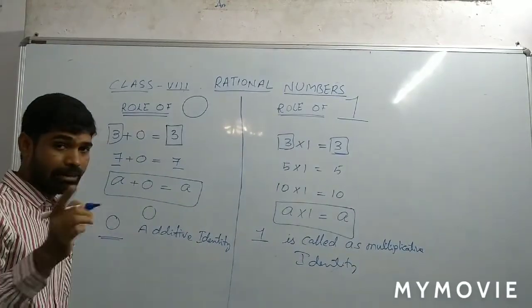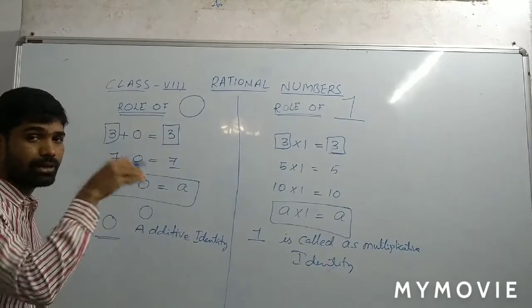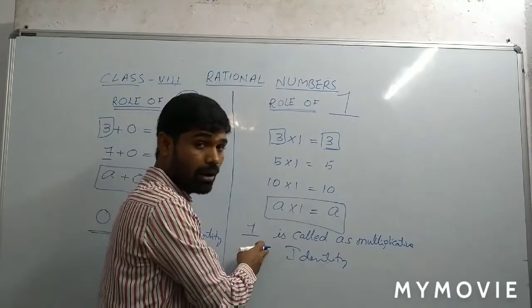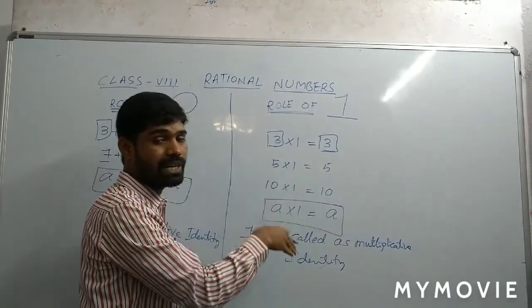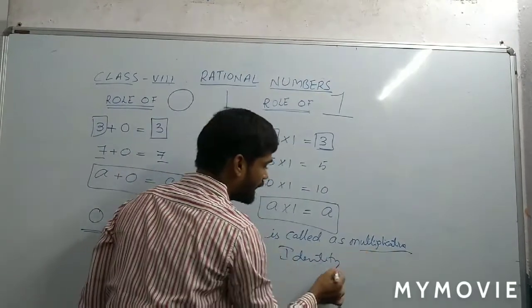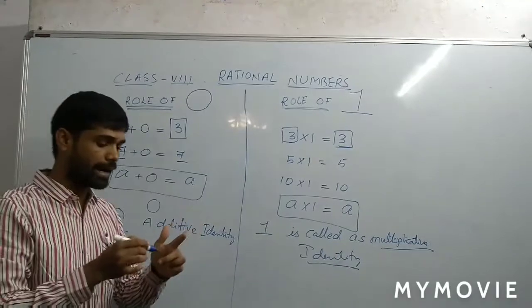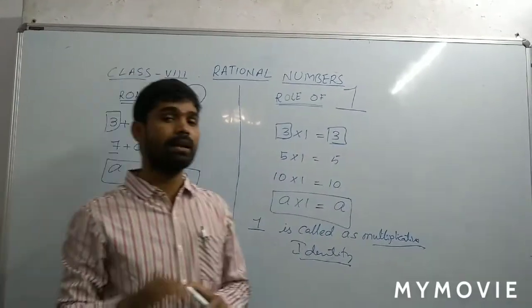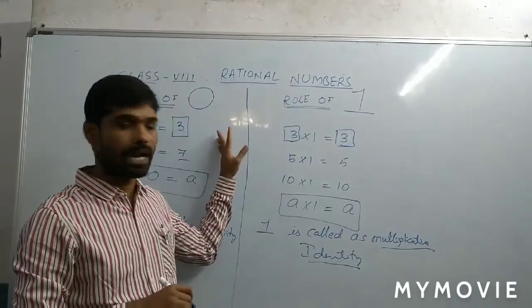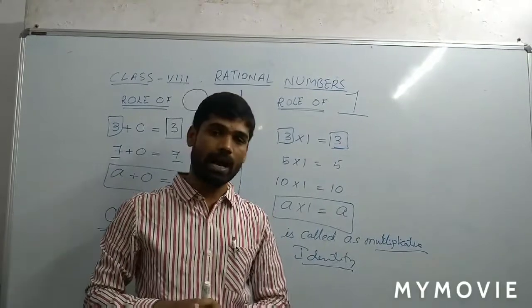So, 0 is called as additive identity — any number added to 0 gives the same rational number. And 1: when 1 is multiplied with any rational number, the answer is the same rational number, so it is called as multiplicative identity. I hope you understand the role of 0 and the role of 1 in mathematics.